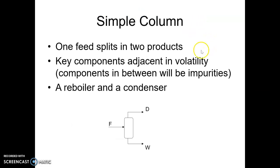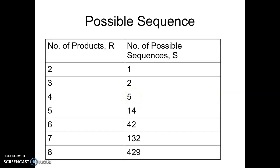A simple column has one feed that splits into two products — distillate and bottoms. Key components are always adjacent in volatility, so no intermediate impurities are considered. There is one reboiler and one condenser, and we assume 100% separation — though not practically possible. So if A, B, C, D are present and B and C are key components, B goes 100% to distillate with none in the bottoms, and C goes only to the bottoms with none in the distillate.